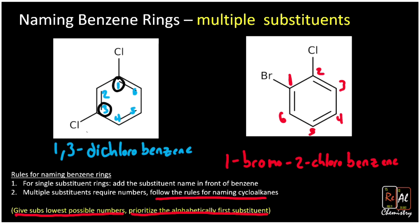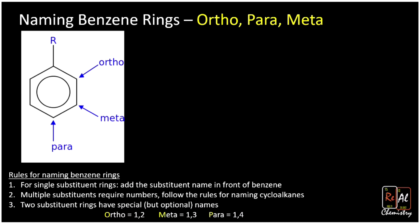So benzene always means that six-membered carbon ring with alternating double bonds, which you'll sometimes see drawn with the alternating double bonds written out and sometimes with the circle inside. Now, for benzene rings with two substituents, we actually have special names that we use instead of numbers sometimes.